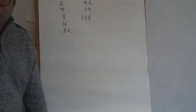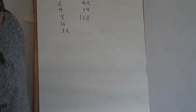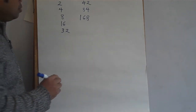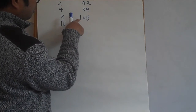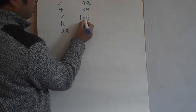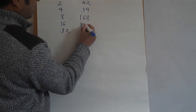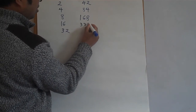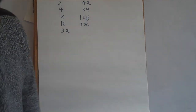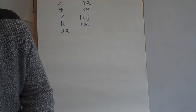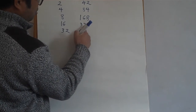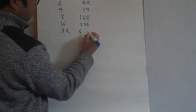What is double one hundred and sixty-eight? Three hundred and thirty-six. And what is double three hundred and thirty-six? Double three hundred is six hundred, double thirty-six is seventy-two — so six hundred and seventy-two.